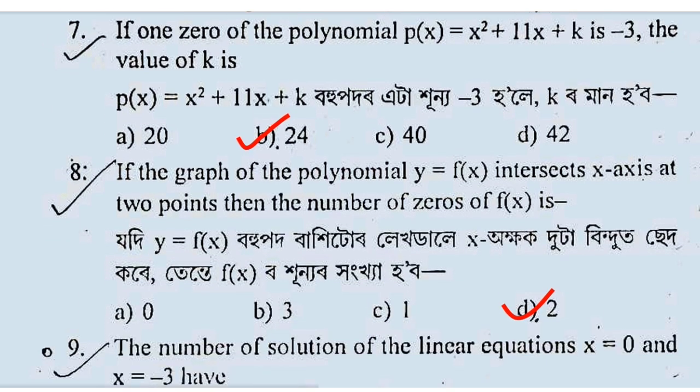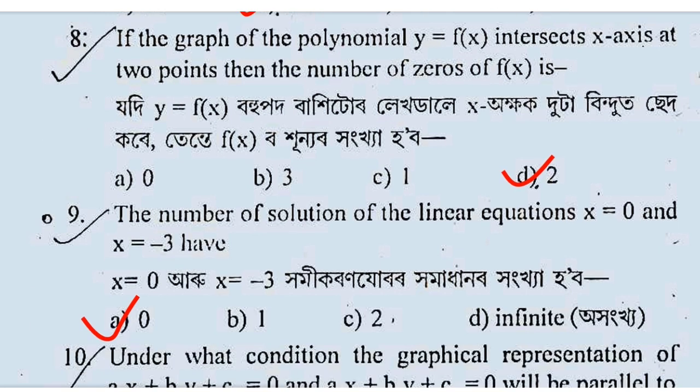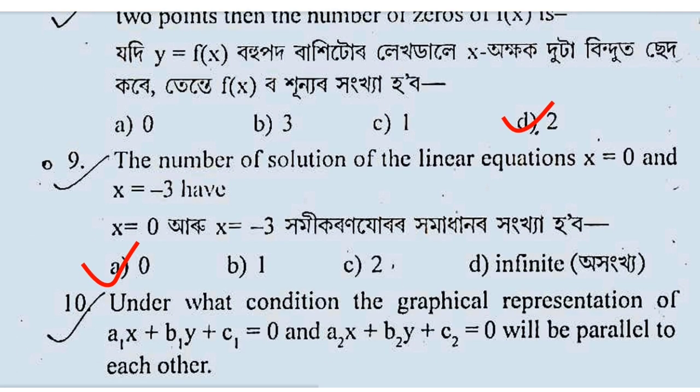If y equals f(x) for all x or x equal to 0, then you will notice that option D. The number is 1.